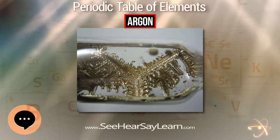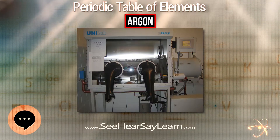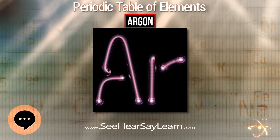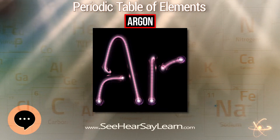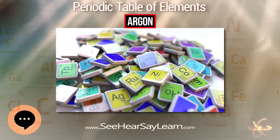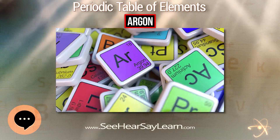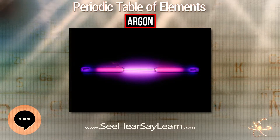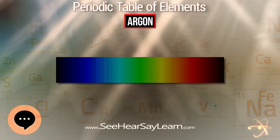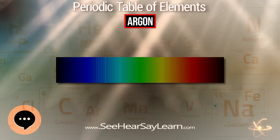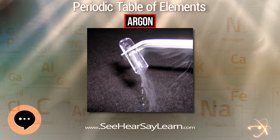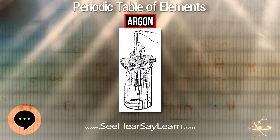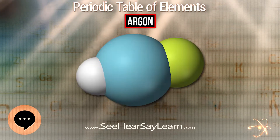Cryosurgery procedures such as cryoablation use liquid argon to destroy tissue such as cancer cells. It is used in a procedure called argon-enhanced coagulation, a form of argon plasma beam electrosurgery. The procedure carries a risk of producing gas embolism and has resulted in the death of at least one patient. Blue argon lasers are used in surgery to weld arteries, destroy tumors, and correct eye defects.